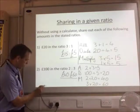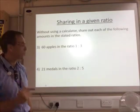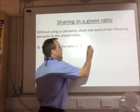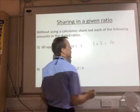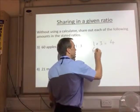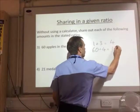We have a look at the next two questions. 60 apples. It doesn't matter what we're talking about, but this time apples in the ratio 1 to 3. Exactly the same process. 1 plus 3 equals 4. So I'm now going to divide. 60 divided by 4 equals 15.